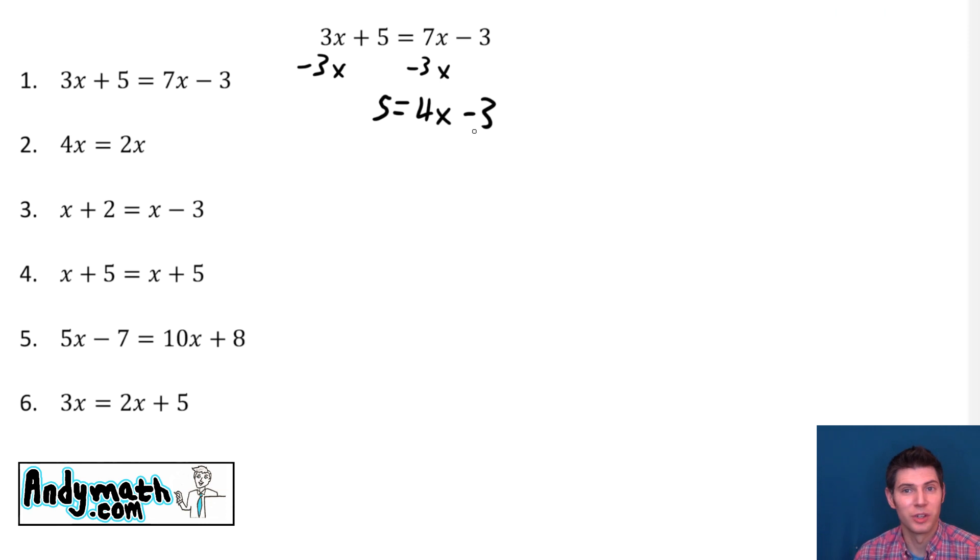Now that we have all the x's on one side, we want to get it alone. So we're going to add the 3 to both sides. 5 plus 3 is 8 equals 4x. Now to get rid of this 4, we're going to divide both sides by 4. 8 divided by 4 is 2, and the 4 divided by 4 is 1, so we got x equals 2. That's the answer to the question.